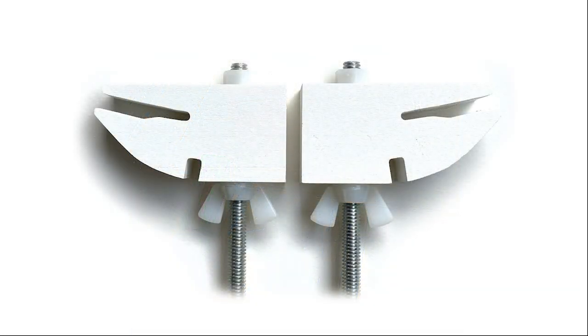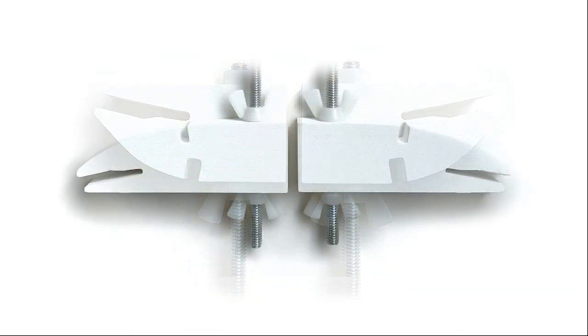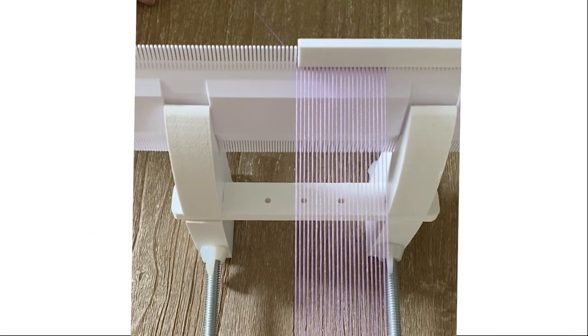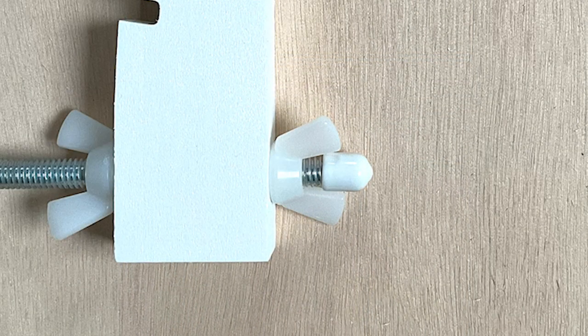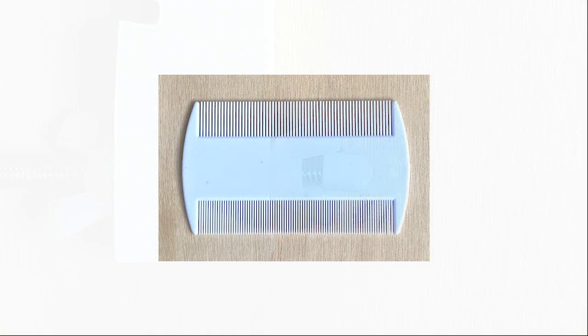Wing nuts and hex nuts keep the end stands in position. Once your warp is in place, two covers keep the threads in place and prevent thread snagging. End caps cover the ends of the rods. And as you weave, you'll need to beat down or compress your work.